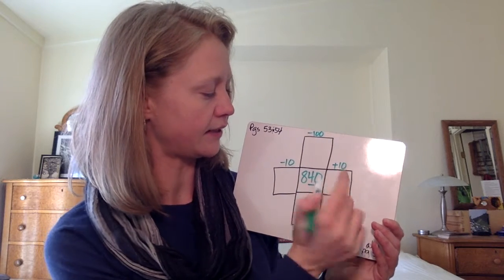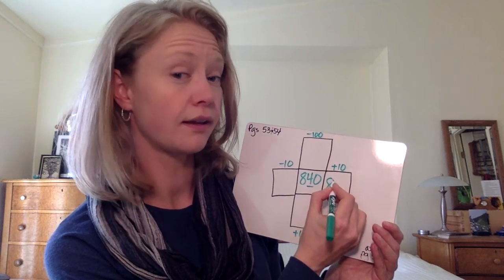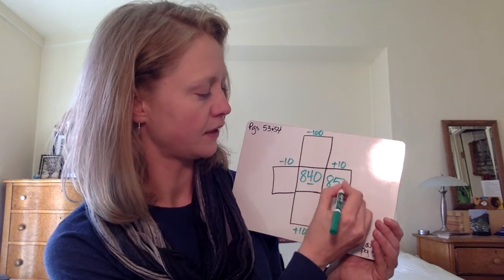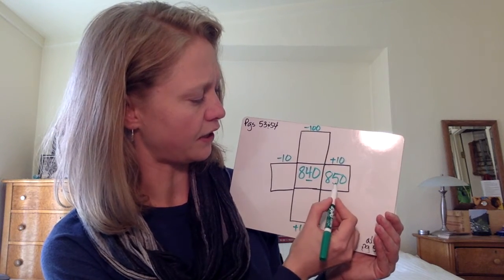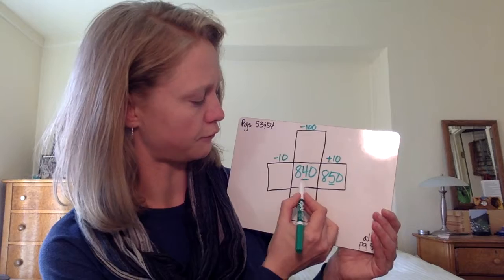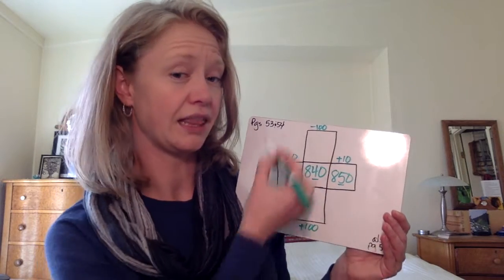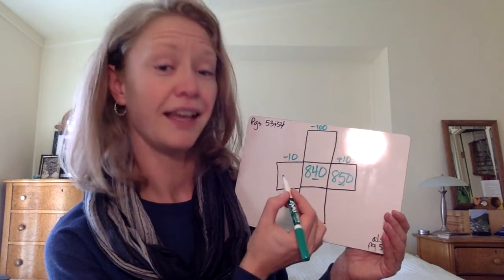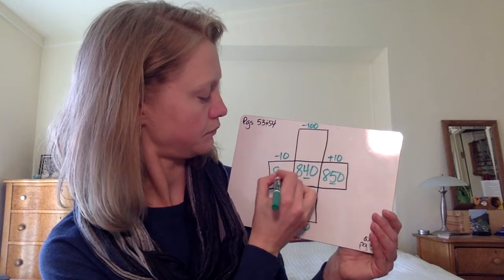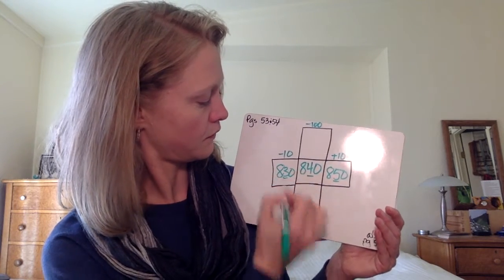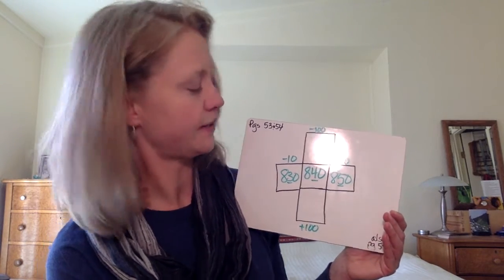So 840, the next 10 would be 850. Now same on the way down. We have 850, 840. What'll be 10 less? 830. The changes are in my tens place.